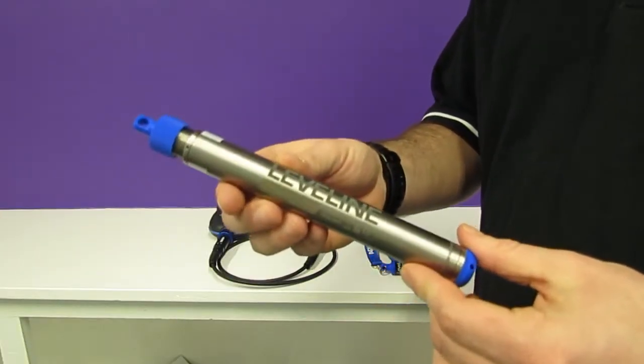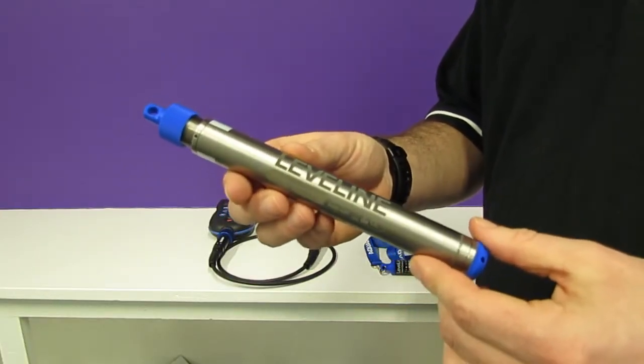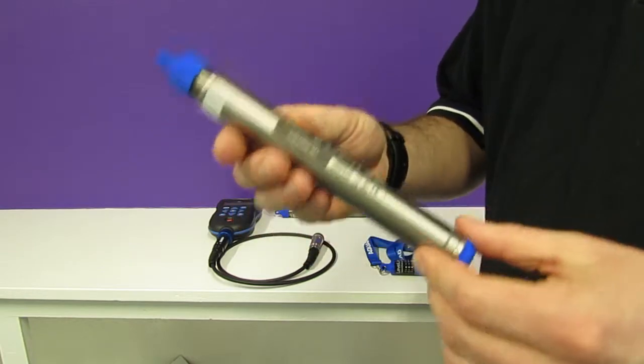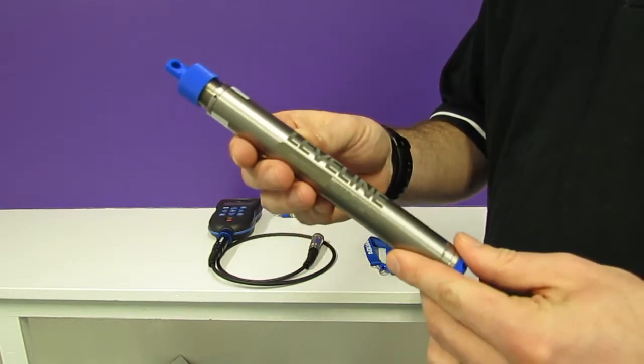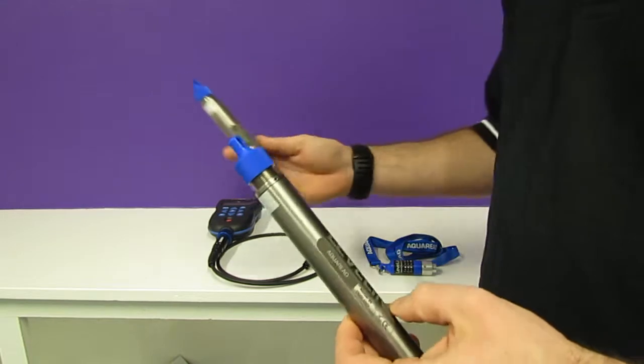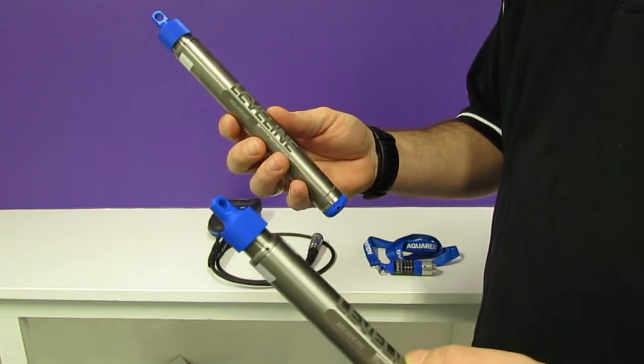There are two different deployment types for the Levelline. One is an absolute deployment and one is a gauge deployment. The absolute version uses a Levelline to detect the changes in water pressure and a Levelline Barrow to detect changes in air pressure.